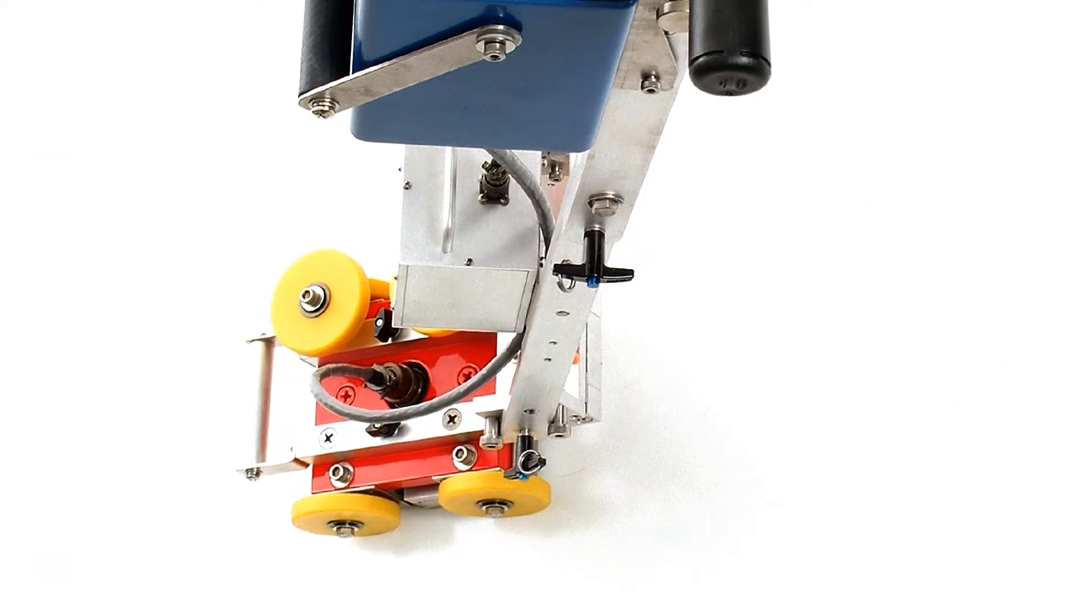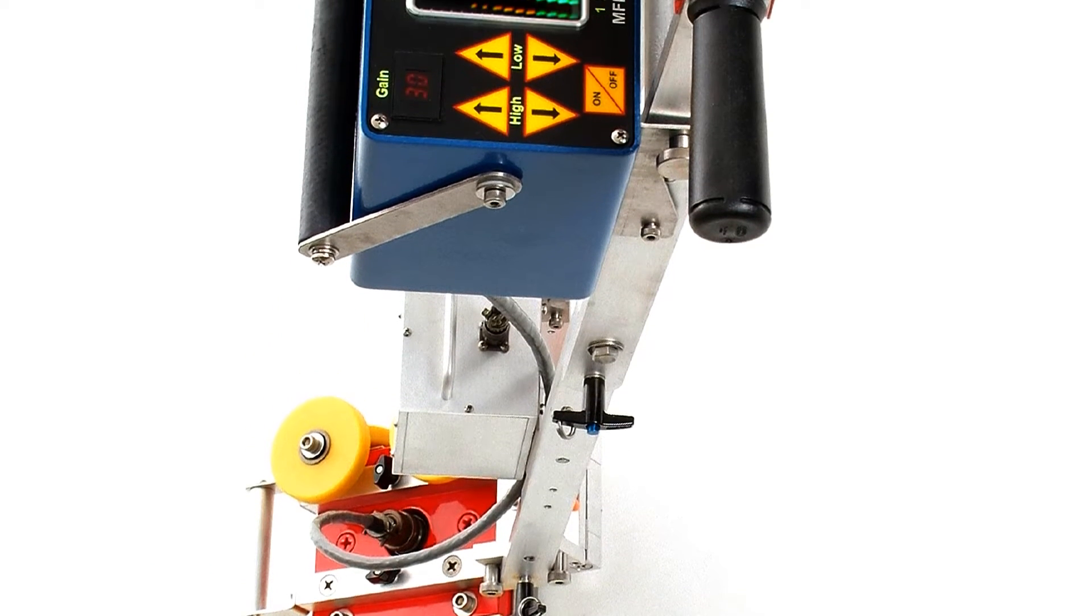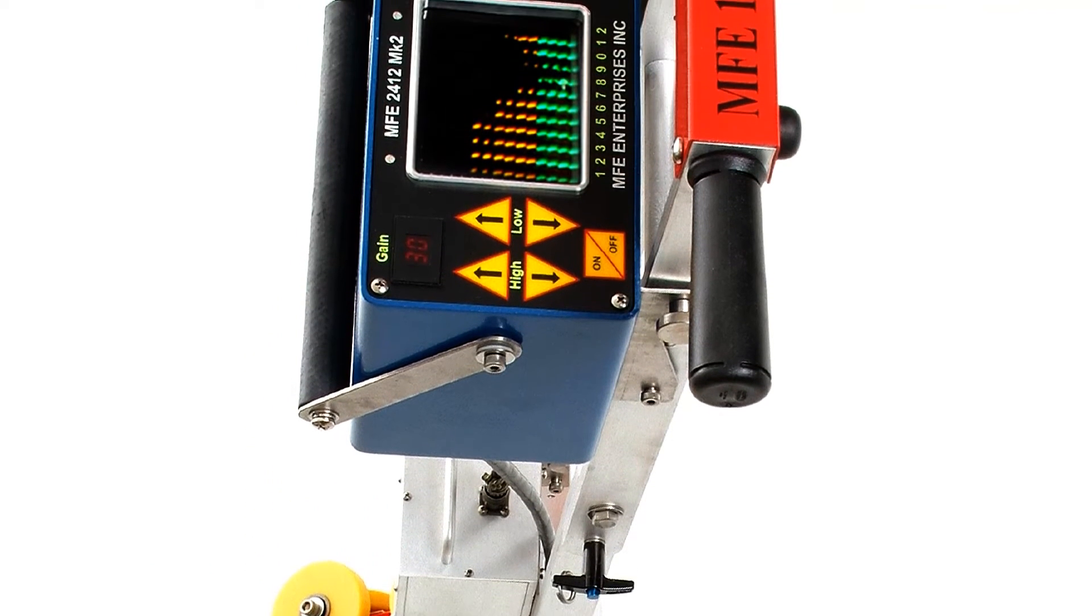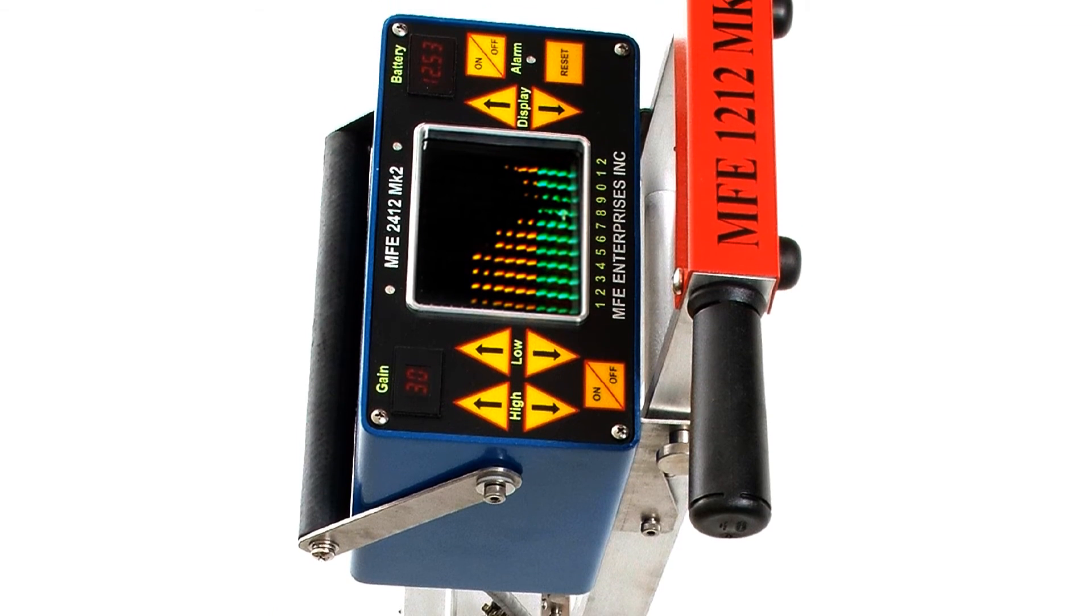The onboard electronic processing unit then transmits data back to the super-bright LED display, where signals alert the operator when a flaw is discovered.